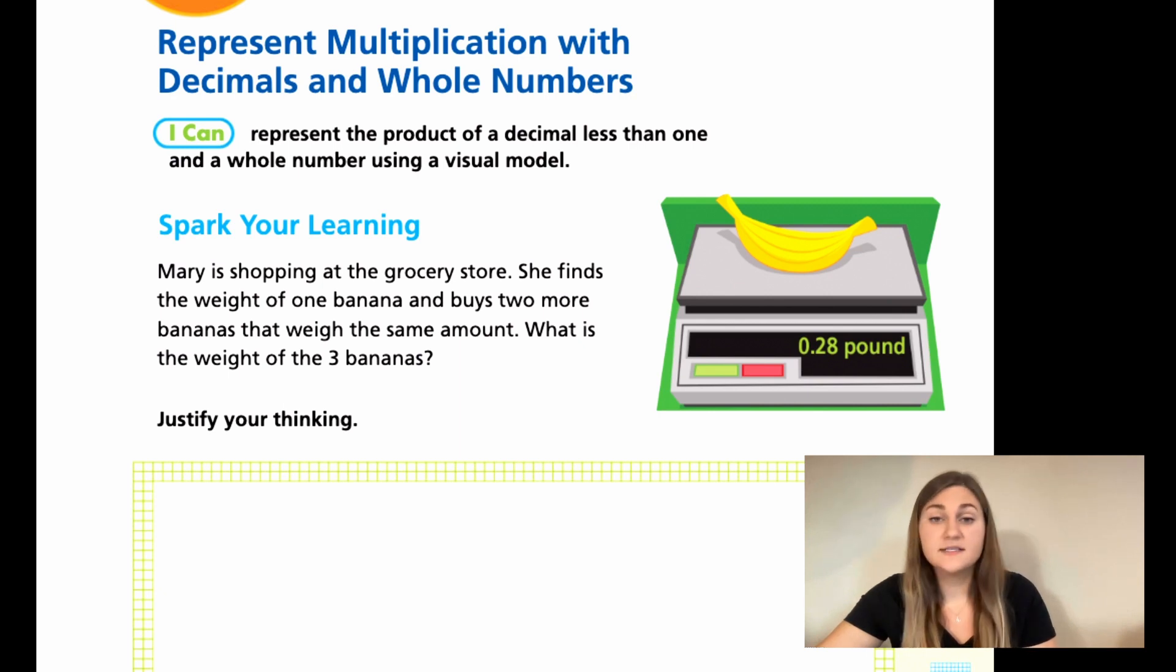Alright, so we see on the scale that one banana is 0.28 pounds. So if she had three bananas that all weigh the same amount, she's going to have 0.28, 0.28, and 0.28. So we're looking for the weight of all three.